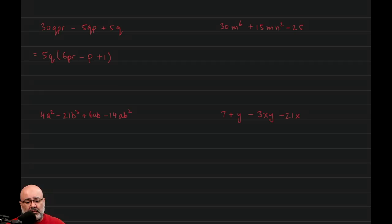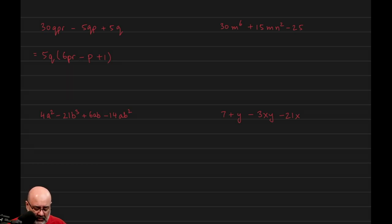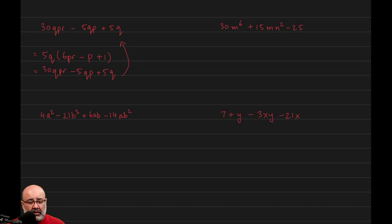Now if we're not sure or we just want to be certain on the test whether we did this correctly or not, all you have to do is distribute the 5Q back in to see if you go back to the original question. So for the sake of completeness, let's try it. 5 times 6 would be 30. Q times PR would just be QPR. 5 times negative 1 would be negative 5. Q times P would be QP. And then 5 times 1 would just be 5, then Q by itself — which is exactly what we had. So no mistakes were made.